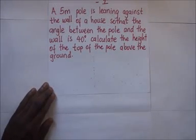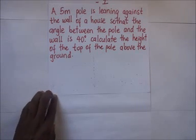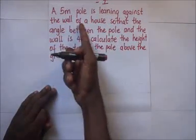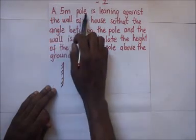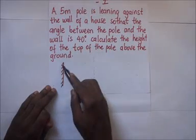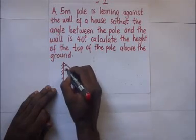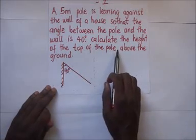In our next question, they are telling us that a five meter pole is leaning against the wall of a house so that the angle between the pole and the wall is 40 degrees. Calculate the height of the top of the pole above the ground. Again we'll draw a sketch. If this is the wall and that is the pole that is leaning, the angle between them is 40 degrees.